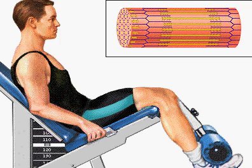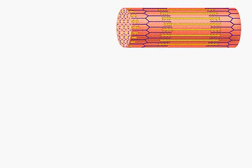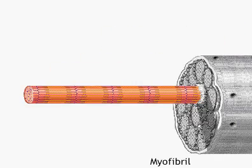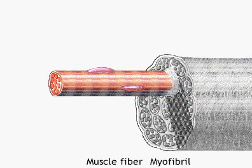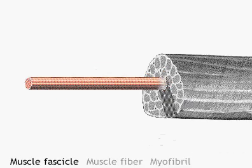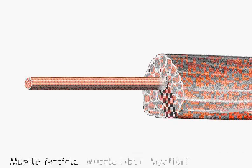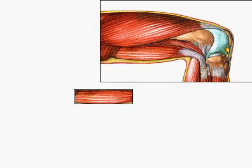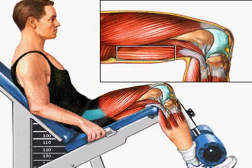As he does his leg extensions, you can see those myofibrils pulling together. Working backwards: myofibrils make up muscle fibres, muscle fibres make up muscle fascicles, and that makes up skeletal muscle. So it's just big to smaller.